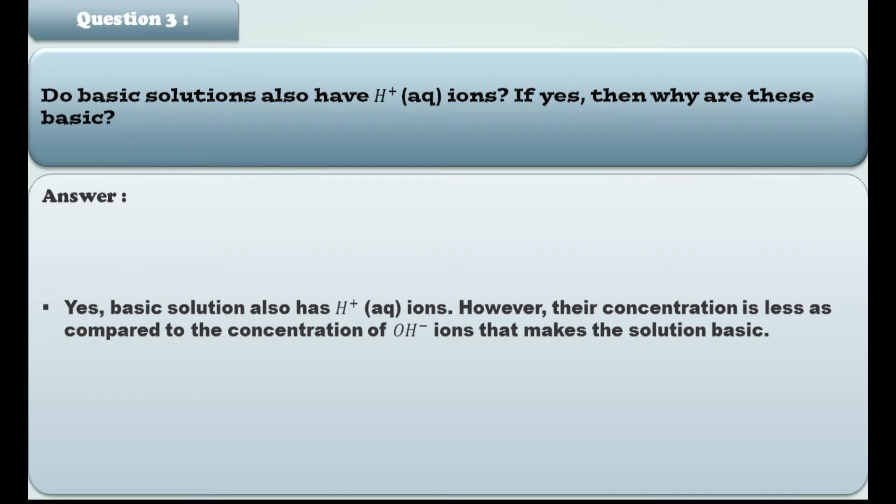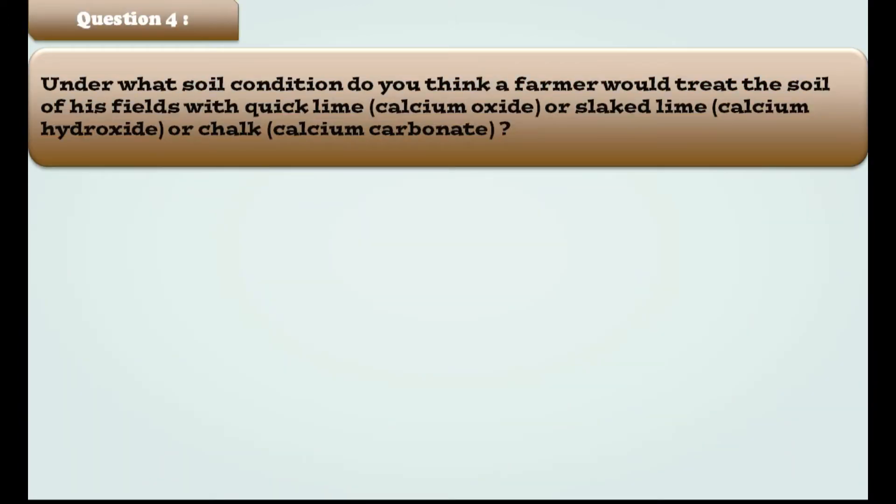Now let's move to question number 4. Under what soil condition do you think a farmer would treat the soil of his field with quick lime that is calcium oxide or slaked lime that is calcium hydroxide or chalk that is calcium carbonate? So before answering this question you should know that this quick lime that is calcium oxide, slaked lime that is calcium hydroxide and chalk which is known as calcium carbonate are bases.